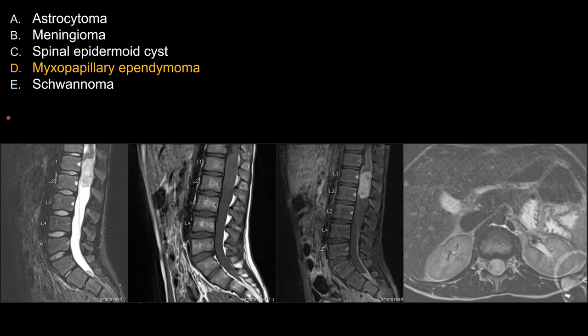So what about the other choices that are not as good for this case? You should be able to eliminate choices A and C pretty much right away. For astrocytoma, that's an intradural but also intramedullary lesion — this one is clearly extramedullary, so A is out. For epidermoid cysts, the enhancement pattern is completely wrong. Remember, an epidermoid cyst is a cyst, so if it enhances it would only have peripheral enhancement; it should not enhance centrally like a solid tumor. So choices A and C should be eliminated right away.